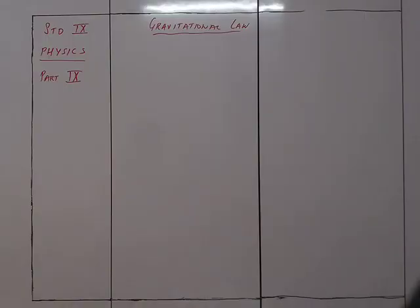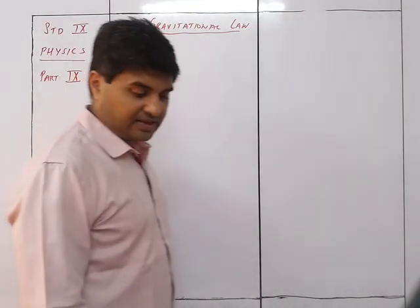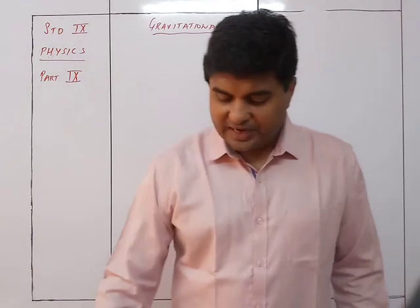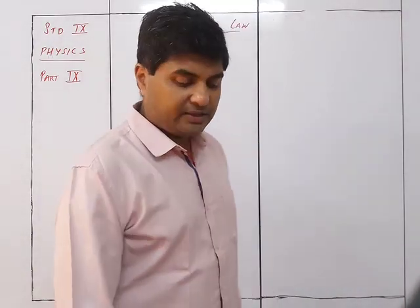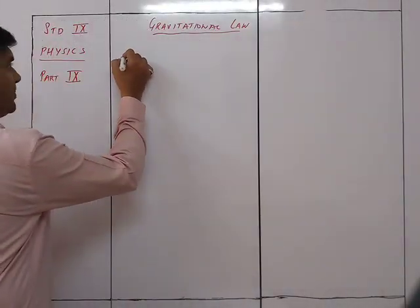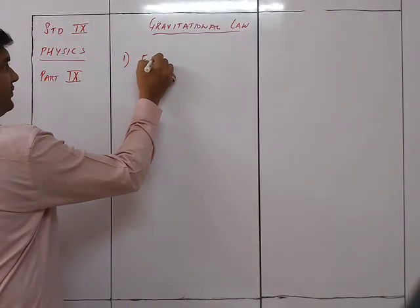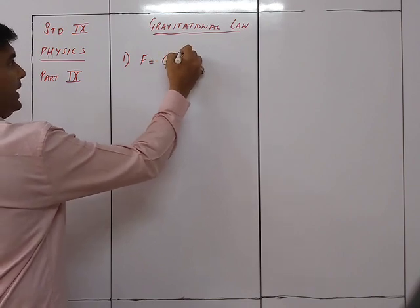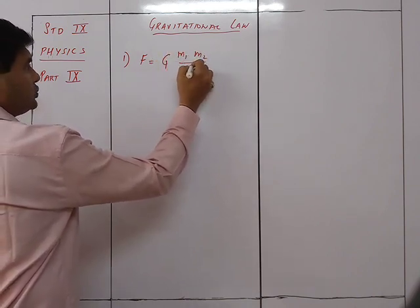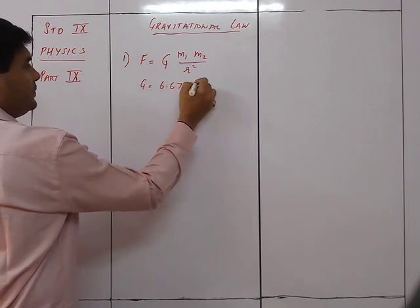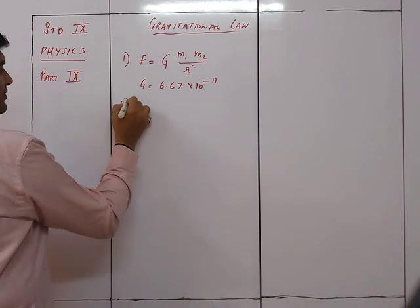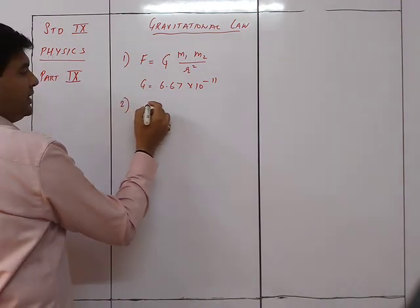We will now look at the numericals of the gravitational law, that is Exercise 3E. Before we start with the numericals, let us go through the different formulas we'll be using. The first formula is F = G·m₁·m₂/r², where G = 6.67 × 10⁻¹¹.